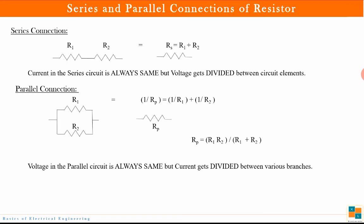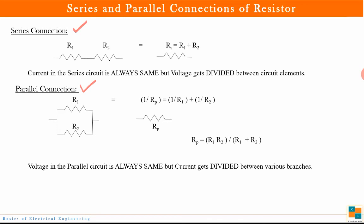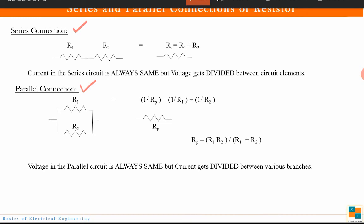Now let us understand how resistances can be connected. If you have more than one resistance, they can be connected in two ways: series connection or parallel connection. Every component has two ends. If only one end of each component is connected together, that is known as a series connection. In series, the total resistance is simply the sum of all individual resistances.